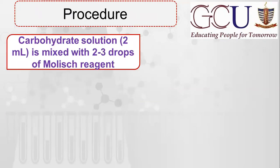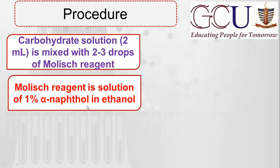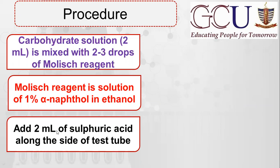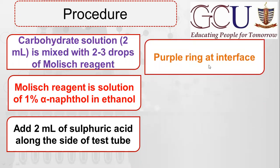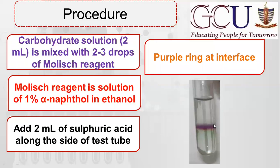Procedure: सबसे पहले carbohydrate का solution 2 ml लेते हैं और उसमें 2 से 3 drops Molisch reagent के डाल देते हैं. Molisch reagent 1% alpha-naphthol in ethanol है. इसके बाद pipette या measuring cylinder से 2 ml sulfuric acid along the side of the test tube डालते हैं. अगर interface पर — यानि sulfuric acid और carbohydrate+Molisch reagent के junction पर — purple color की ring बन जाए, तो इसका मतलब है यह carbohydrate है; otherwise carbohydrate नहीं है.